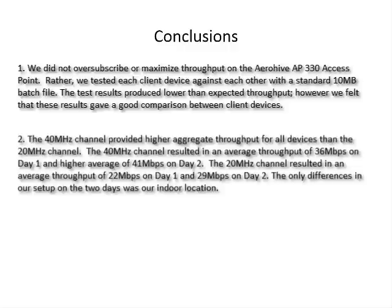Second, the 40 MHz channel provided higher aggregate throughput for all devices than the 20 MHz channel. The 40 MHz channel resulted in an average throughput of 36 Mbps on Day 1 and a higher average of 41 Mbps on Day 2. The 20 MHz channel resulted in an average throughput of 22 Mbps on Day 1 and 29 Mbps on Day 2. The only difference in our setup on those two days was our indoor location.